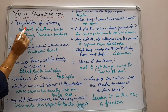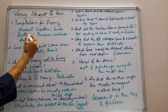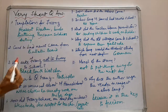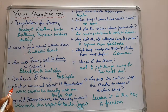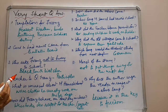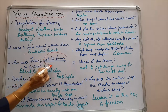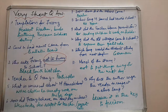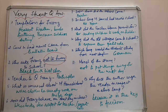Question 1: What was the temptation for Franz? It was the pleasant weather, the twittering of birds, and the Prussian soldiers drilling. Now good and bad news came from the bulletin board. You could also be asked why he was running away from school — because he was unprepared with the participles. Who asked Franz not to hurry to school? When he was hurrying to school he met blacksmith Watcher, who told him not to hurry as there was sufficient time.